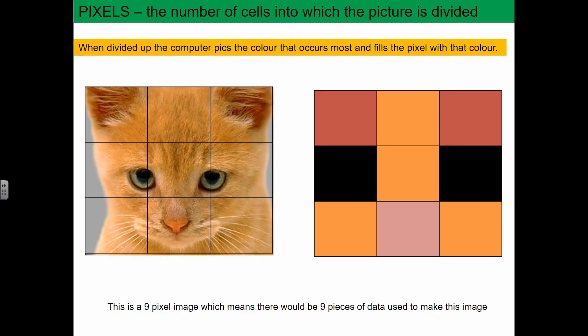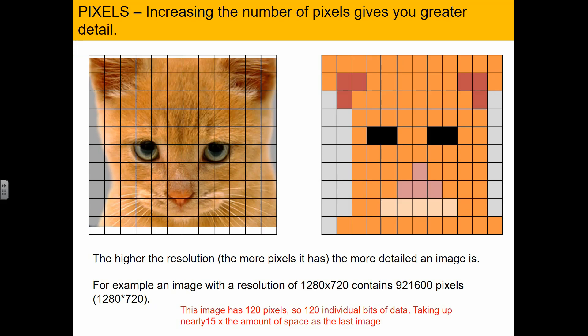You can see on the left there's a picture of a cat. The computer has divided it into a grid of nine pixels, and on the right it looks horrendous—nothing like a cat. We've got red squares, orange squares, and black squares. So your computer must increase the quality by doing a bigger grid. It's got lots more pixels in, and on the right we've got some form of weird shape that's supposed to represent the cat, but it still doesn't look like a cat. We need to increase the number of pixels to give us greater detail.